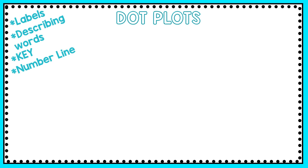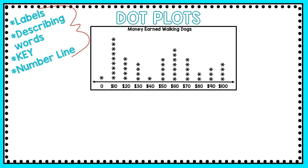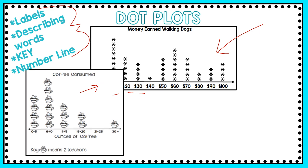Let's look at a few more examples. Remember to keep these things in mind whenever you're looking at dot plots or graphs. Here is a dot plot where it's not dots at all but stars or symbols, and you see a number line with money represented counting by tens at the bottom. On this next dot plot, you have pictures of coffee cups instead of dots. Here's the number line, and the range of ounces consumed by teachers goes from zero to five and six to ten.